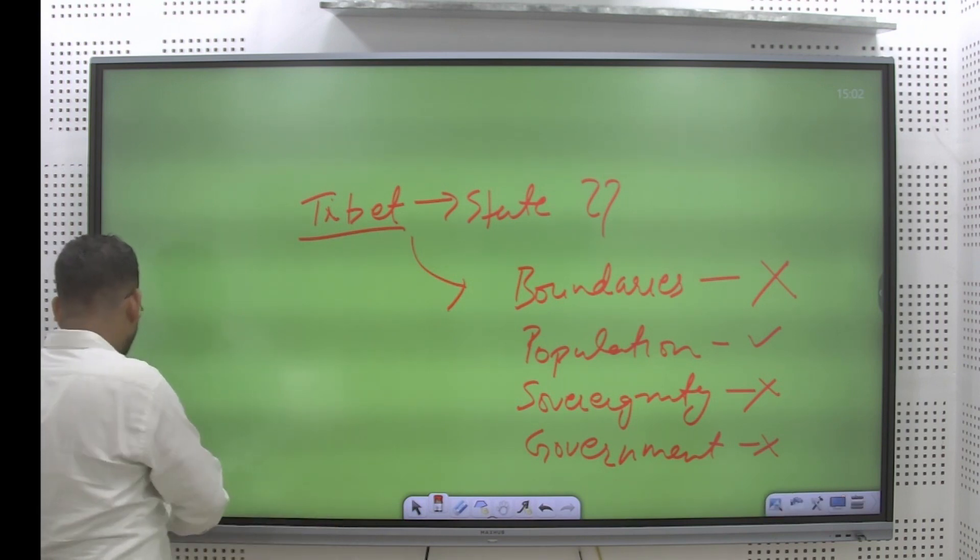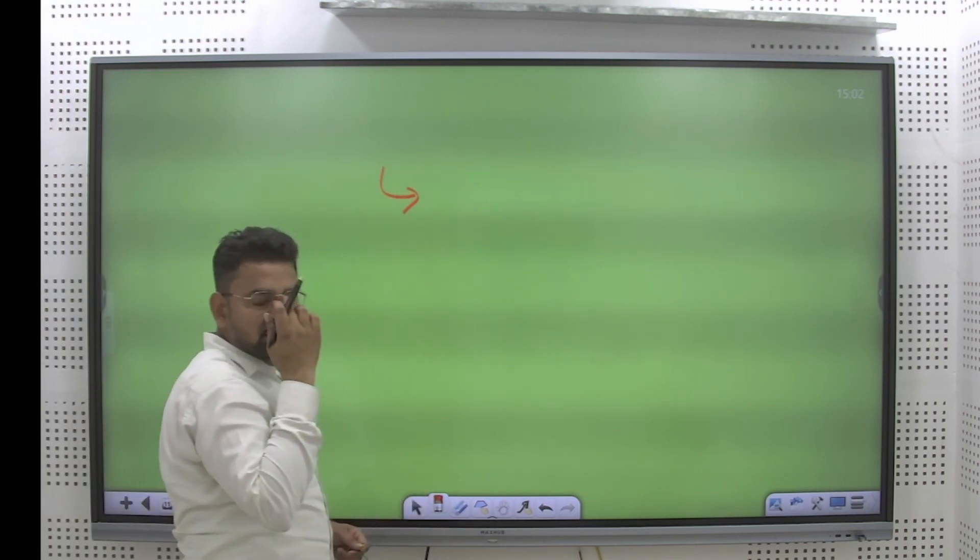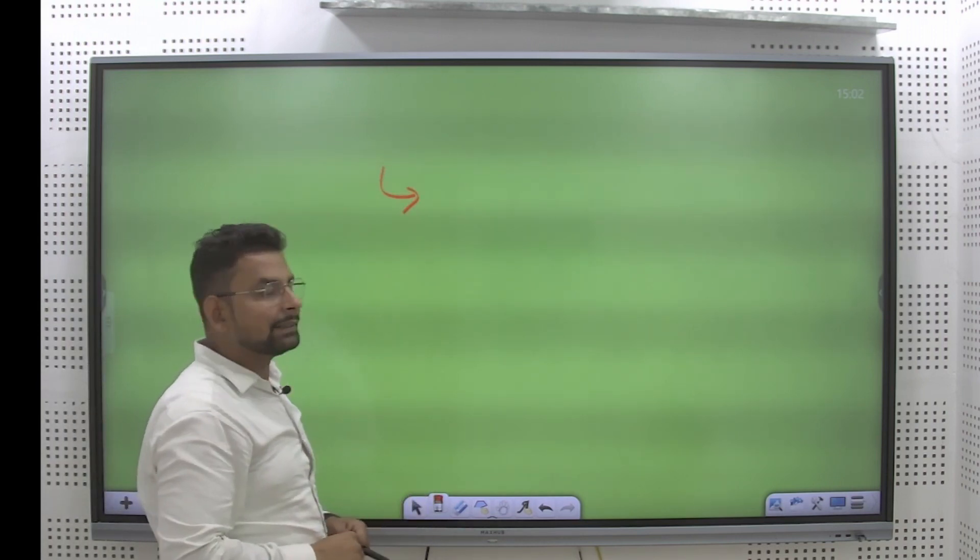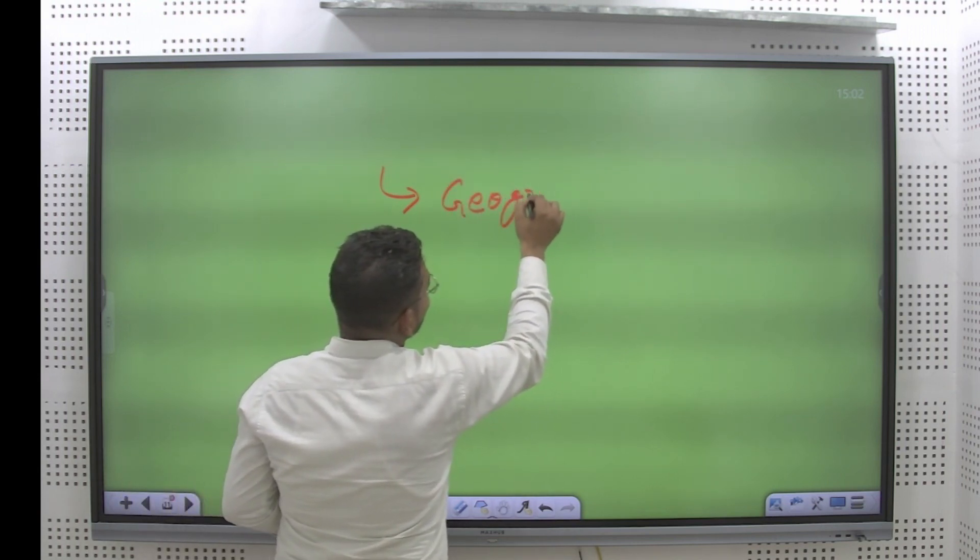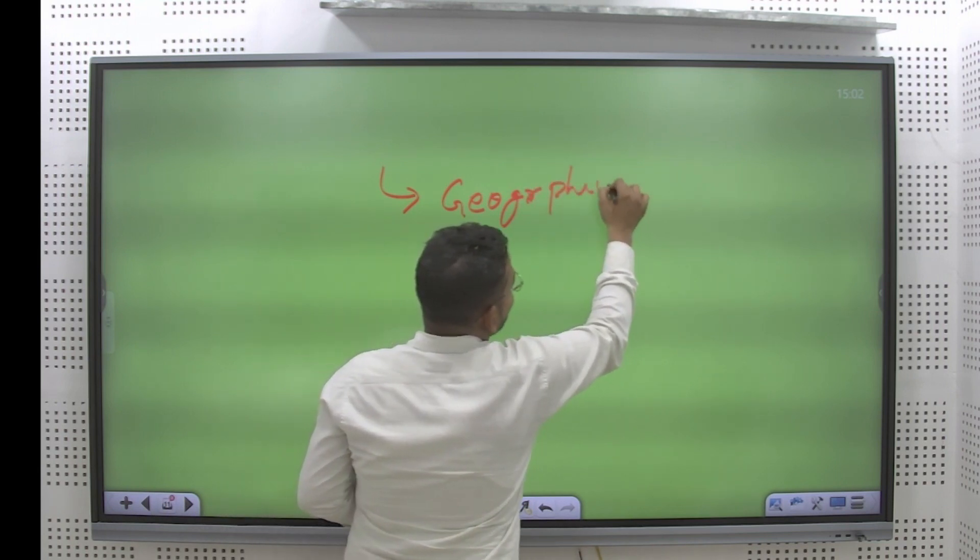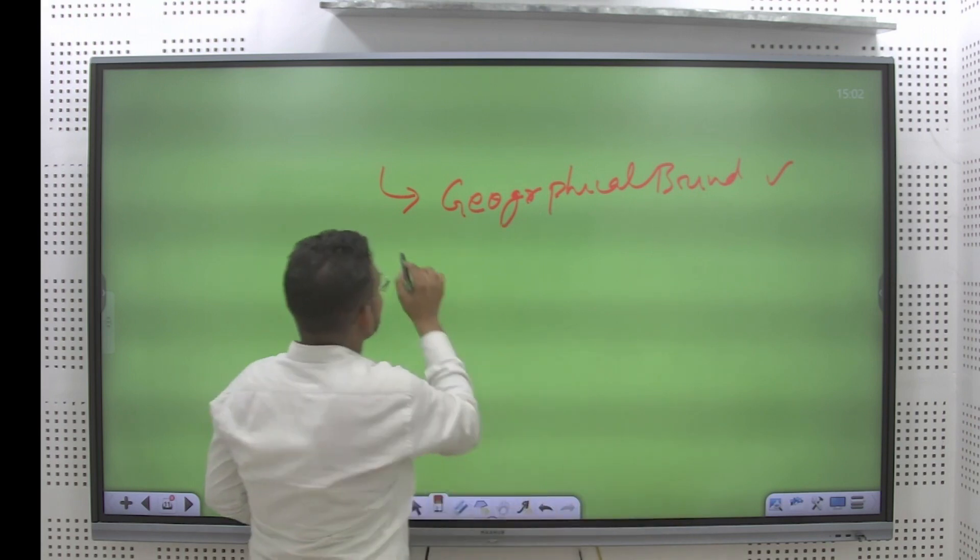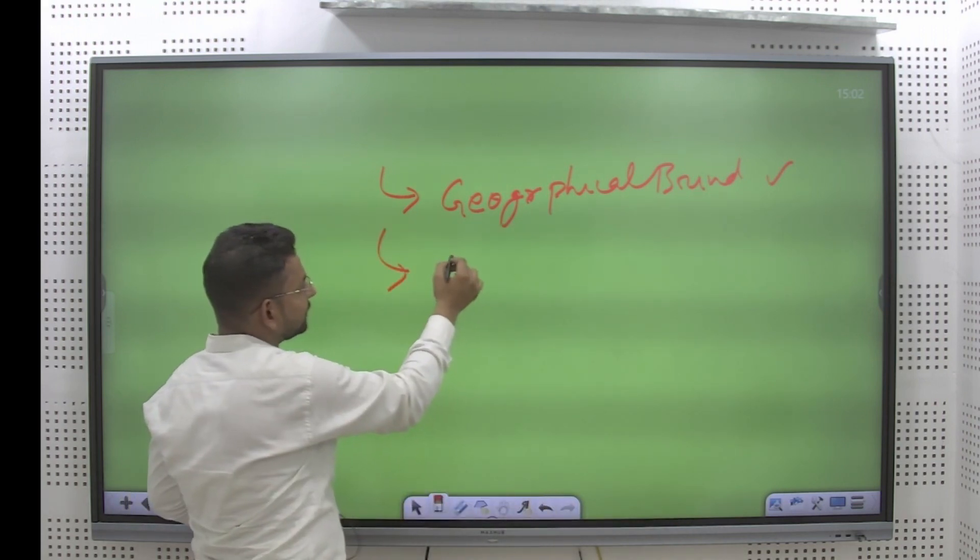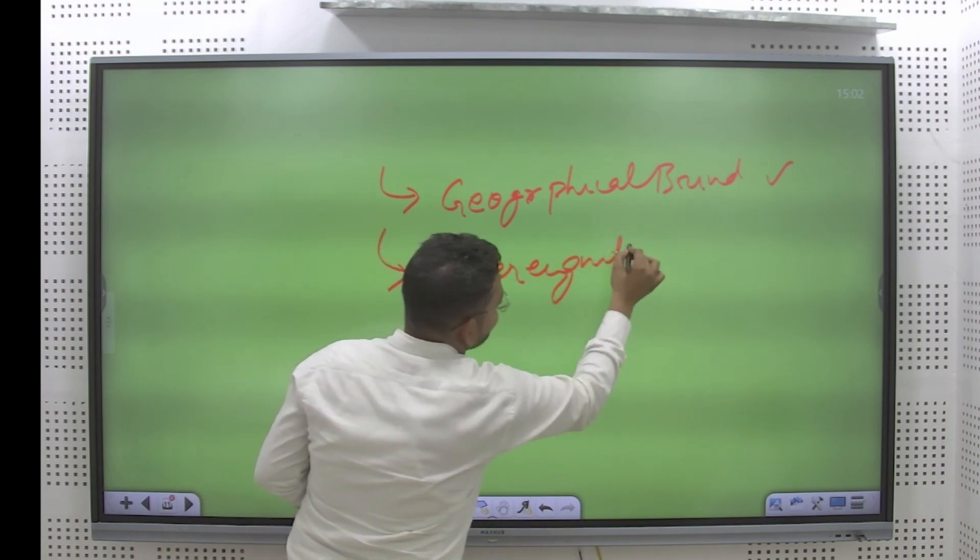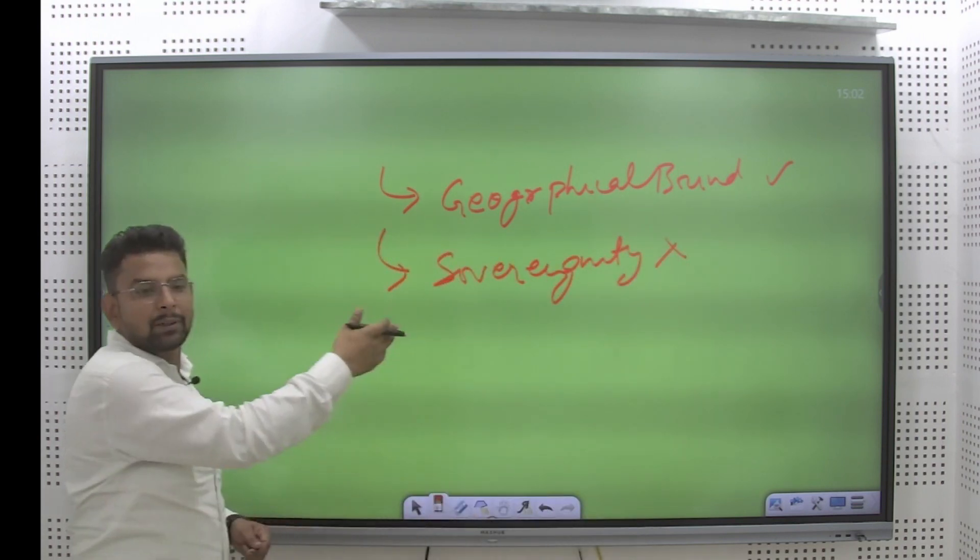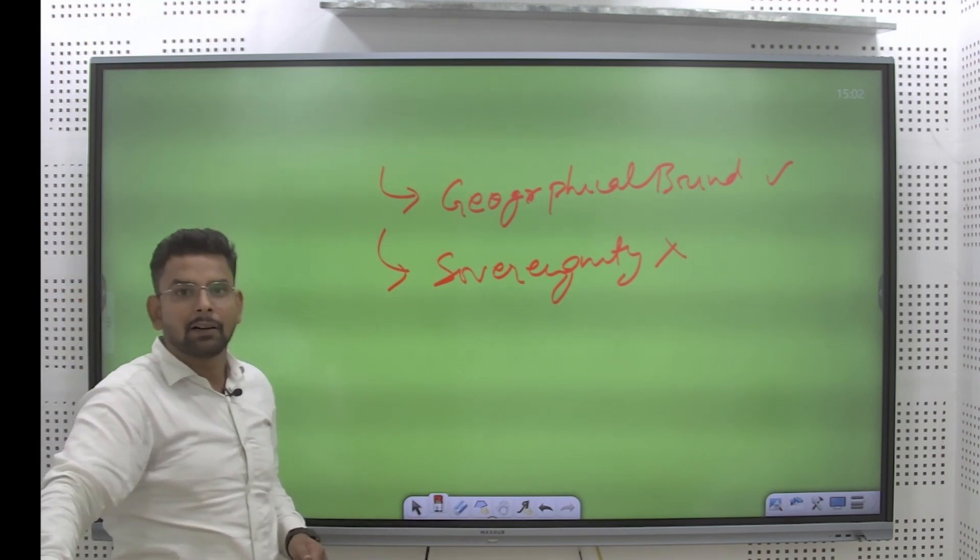In the similar sense, if you analyze India. Before independence, in the pre-independence era, India was having a geographical boundary? Yes. India was having the sovereignty? No. At the second point on itself, we can conclude India was not a state in the pre-independence era.